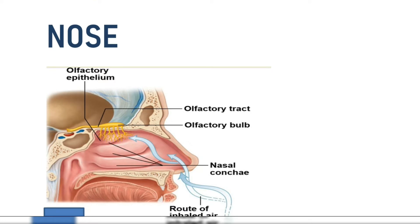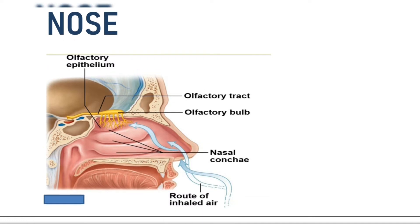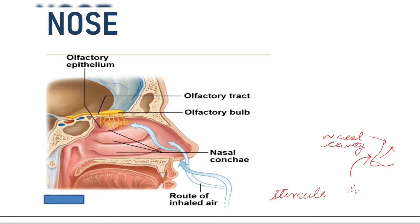Now coming to the nose. The stimulus here is any aromatic substance or odorant made up of dissolved chemicals. This odorant travels through the nasal cavity and is received by the olfactory receptor. Two important characteristics of the olfactory receptor, as given in your NCRT, are that it is made up of olfactory epithelium and it is mucus-coated.